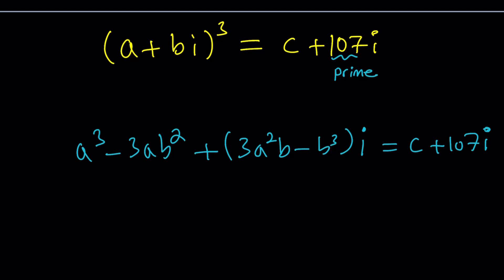And this equal to C plus 107I. Did I say 107 is prime? I think I did. Now take a look. This is supposed to equal C and this is supposed to equal 107. Nice. Because A and B are positive integers, this single equation is a Diophantine equation and it should give us the solutions, right?